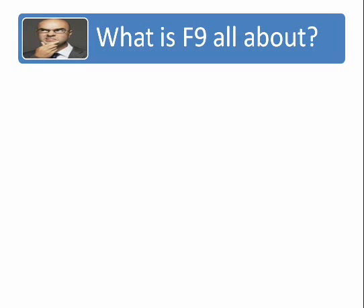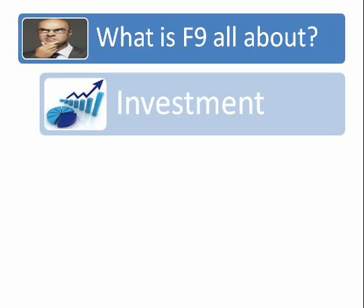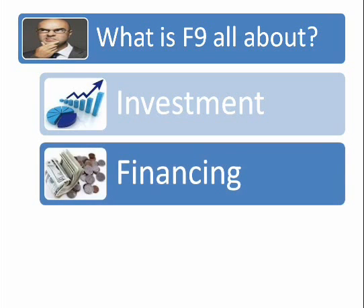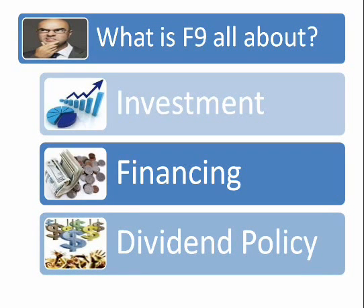So what is F9 all about? F9 is about three key things. First, investment — the key objective of a business is to maximize shareholder wealth, and we do that by investing in profitable projects. Second, we need to look for financing to fund the investment. And finally, we need to give back to the shareholder through dividend policy. Whenever someone mentions F9, you should be thinking investment, financing, and dividend policy.